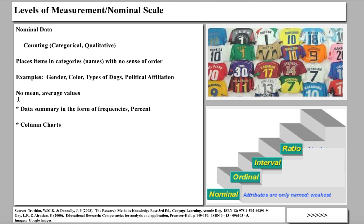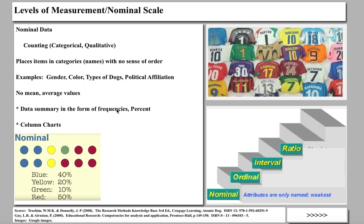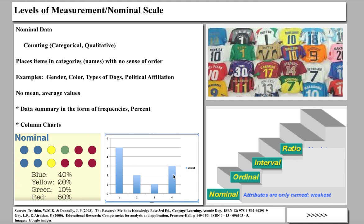There is no multiplication or division with nominal data. You don't report things in terms of means or average values. The summary is usually in the form of frequencies or percents — for example, if you surveyed 12 people about favorite color: 40% wanted blue, 20% yellow, 10% green. Another very common way of representing it is in a bar chart. It's very simple data analysis — it just names things and puts them in categories. The numbers on athletes' jerseys are nominal data; the numbers have no meaning — you wouldn't add them up and divide to get a mean jersey number.